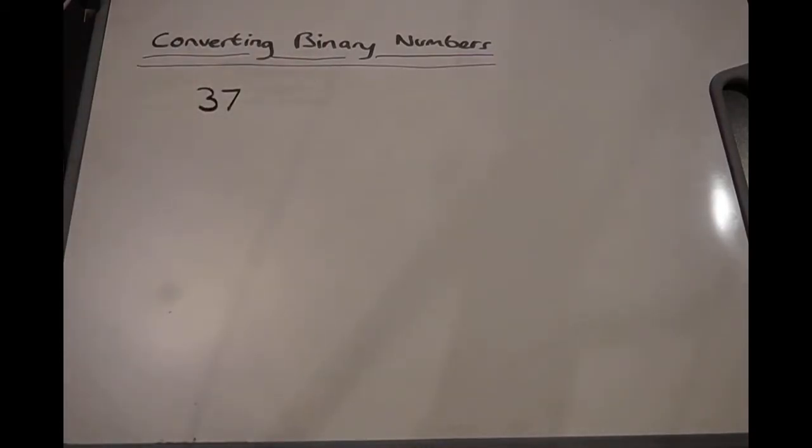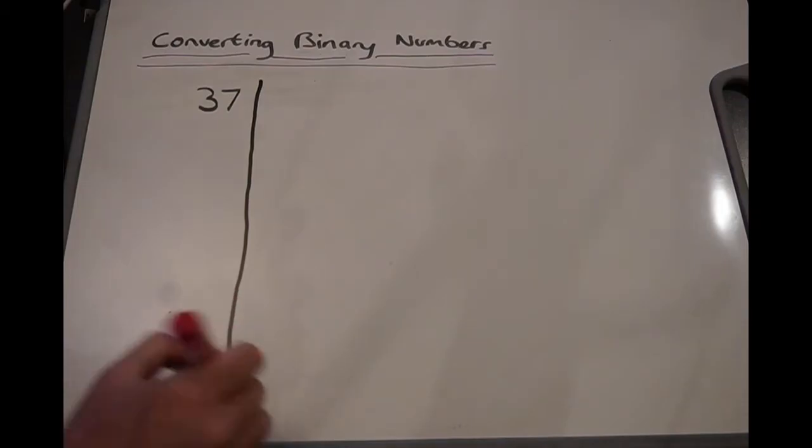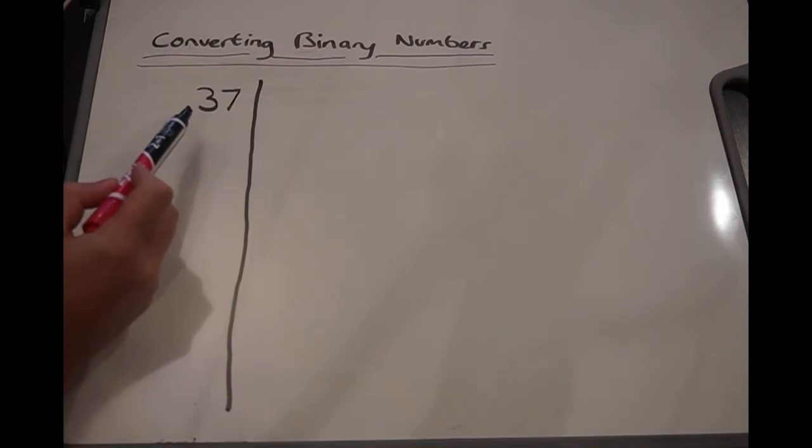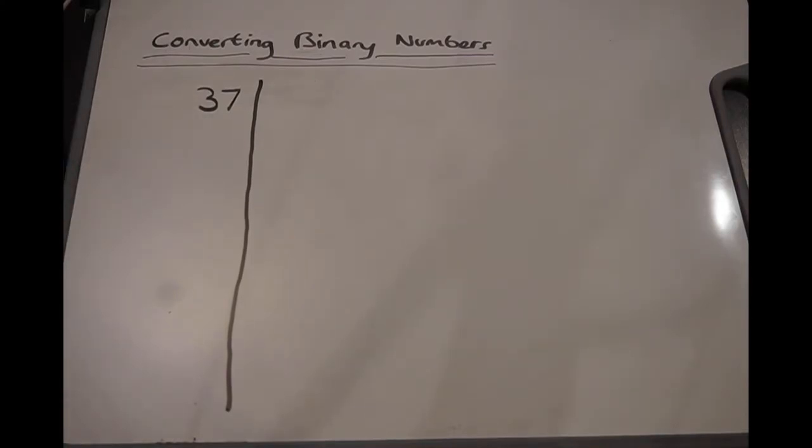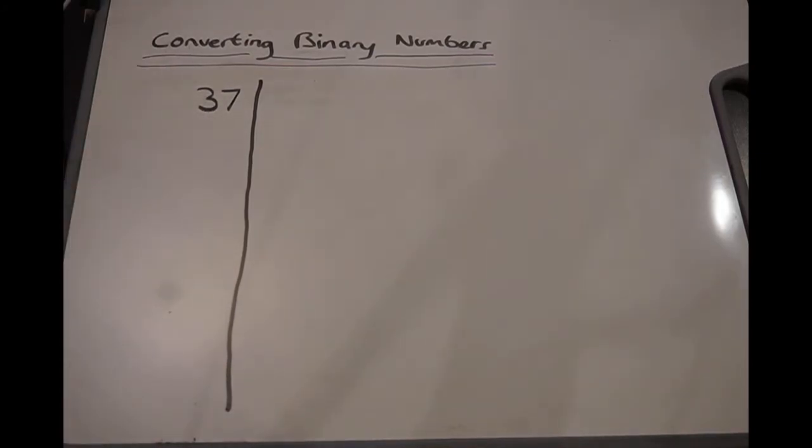And then basically what I'm going to do is divide that number by 2. Now, what's important to remember, and something that can be difficult to get your head around, is I'm going to do something that we do a lot in computer science, which is integer division. So basically, I'm going to be saying how many times does 2 go into 37, and then I'm going to be calculating what is left.